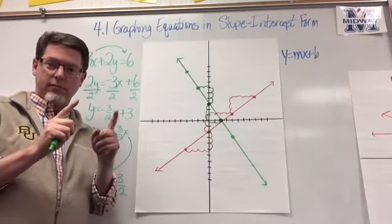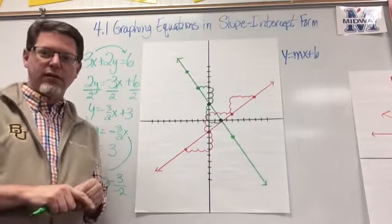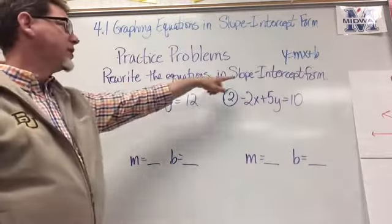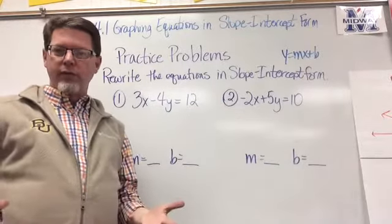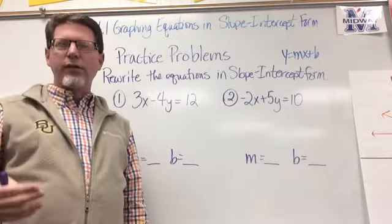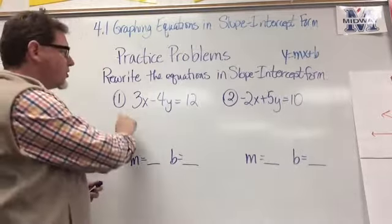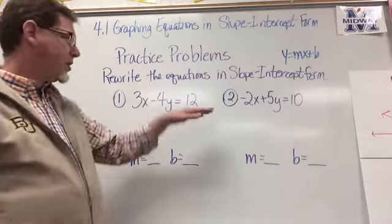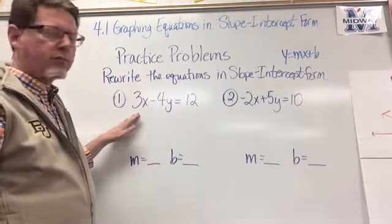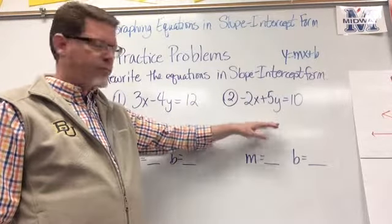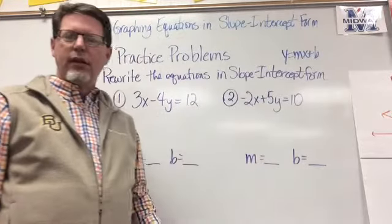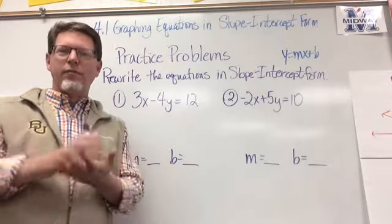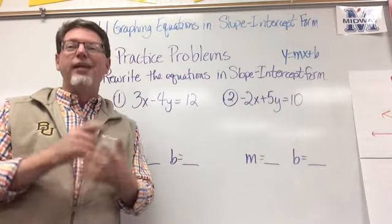Here are your practice problems. Rewrite these two equations in slope-intercept form — meaning solve for y, remembering that y must be positive. Then identify the slope m and the y-intercept b. The first equation is 3x minus 4y equals 12, and the second is negative 2x plus 5y equals 10. Take a picture of your practice problems and submit through Edmodo. When we come to class, we'll stamp coordinate planes in our composition books and graph them together.